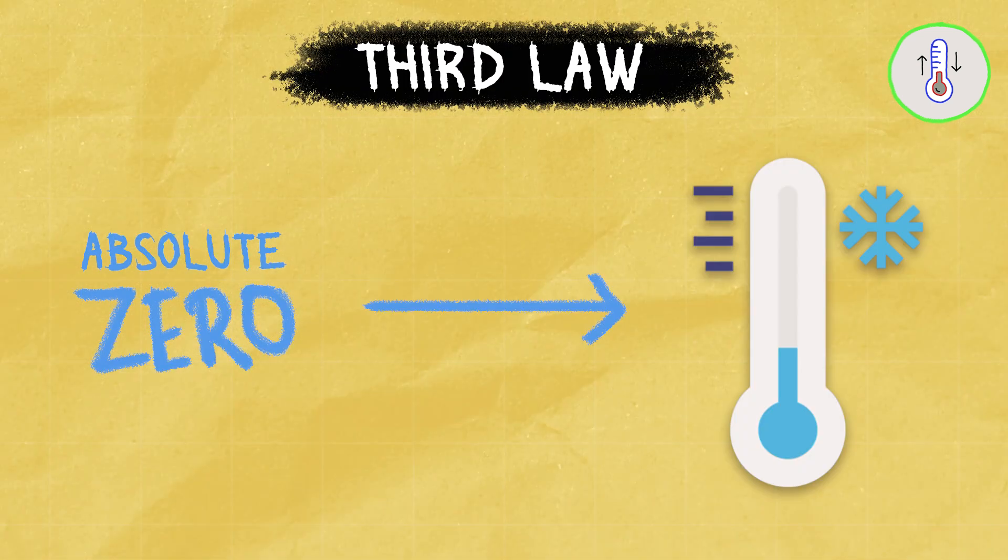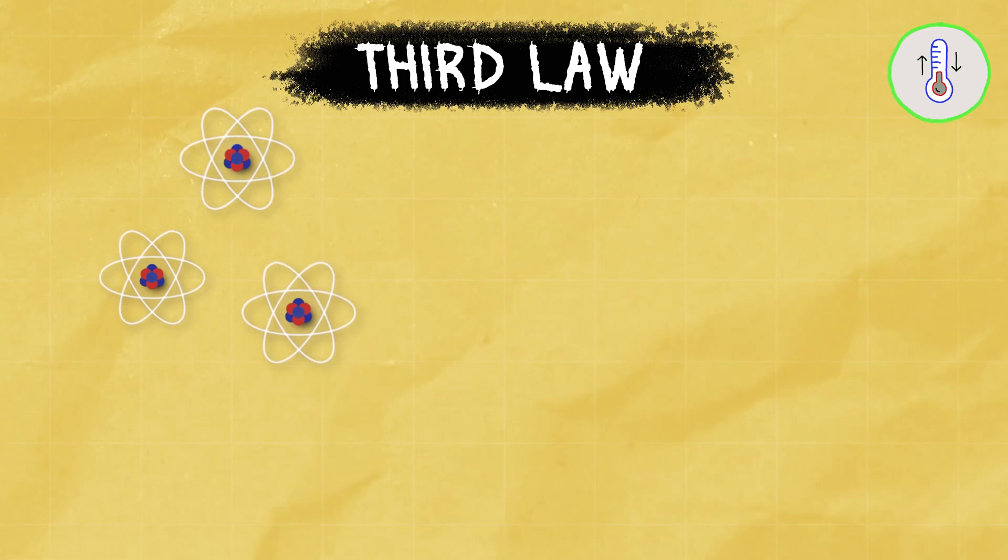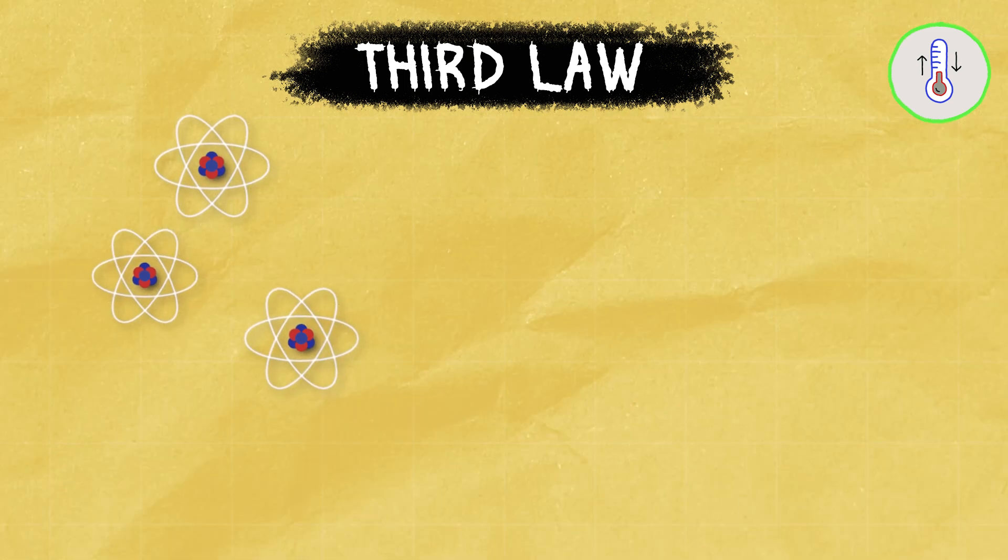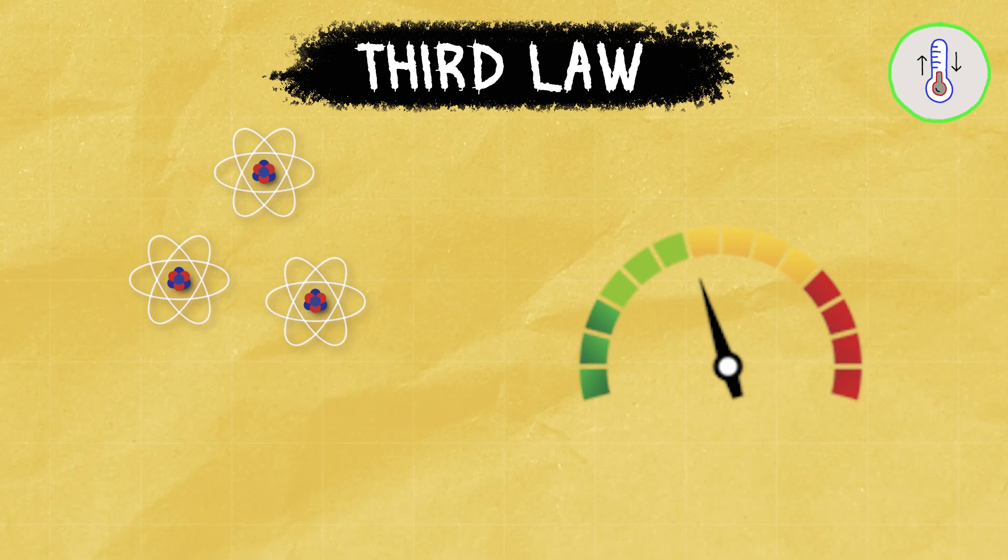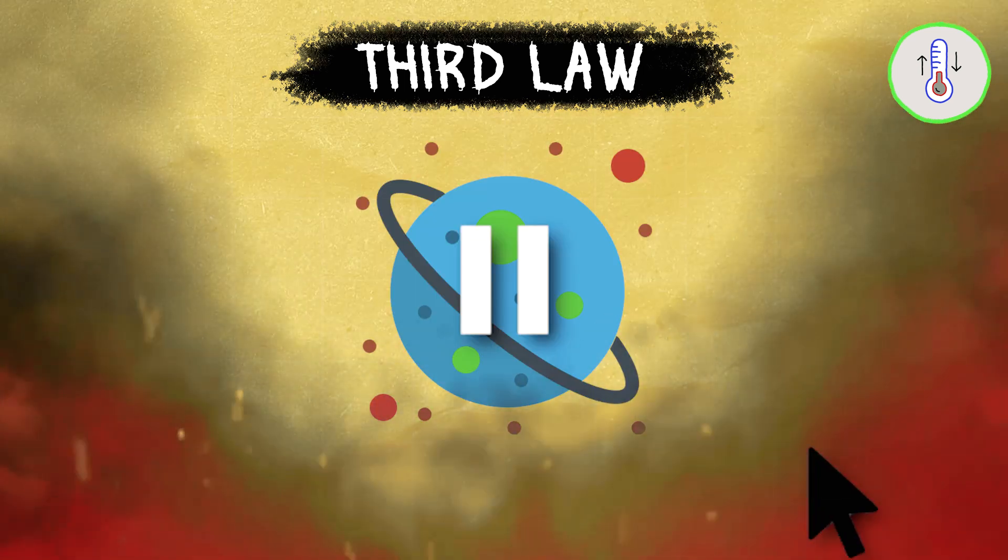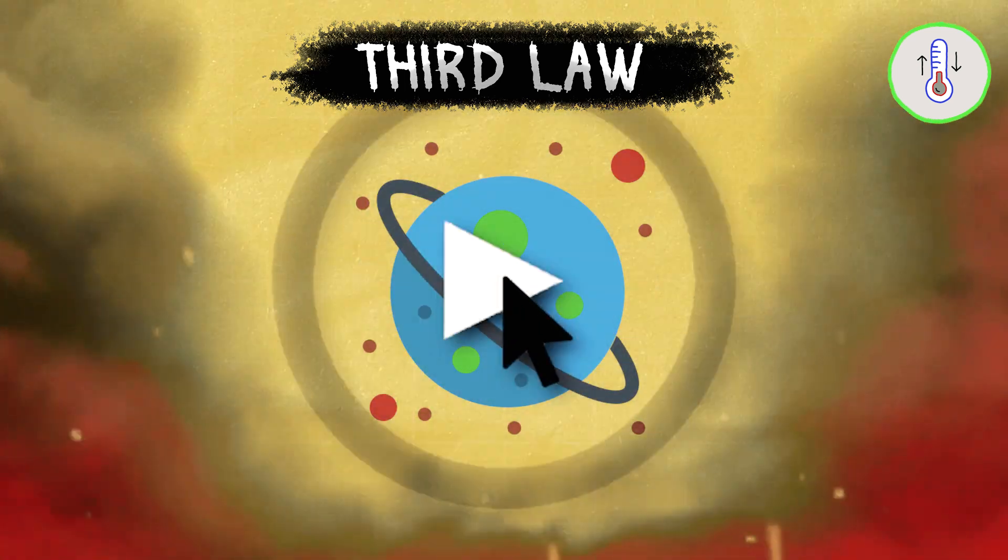The third law deals with the concept of absolute zero, the coldest possible temperature. At this temperature, all atomic motion stops, and according to the law, the entropy of a system reaches its minimum value. It's like hitting the pause button on the universe's heat game.